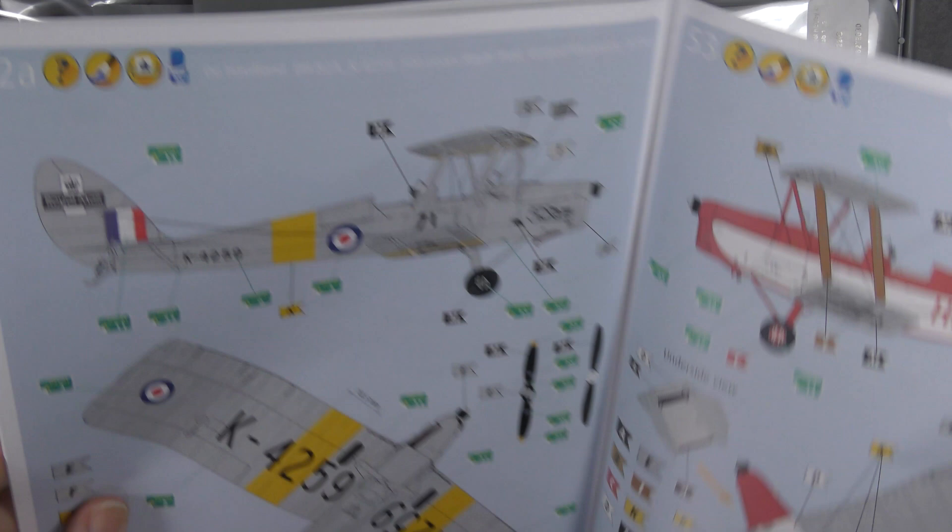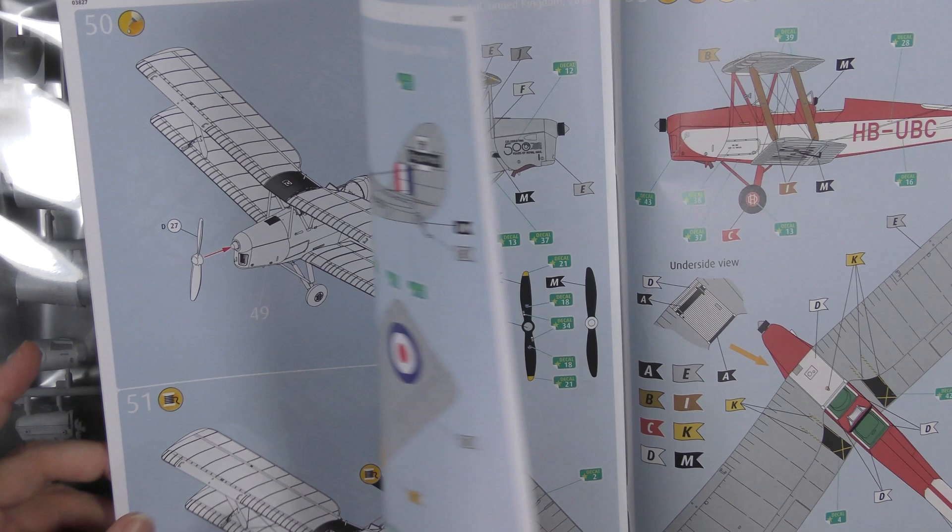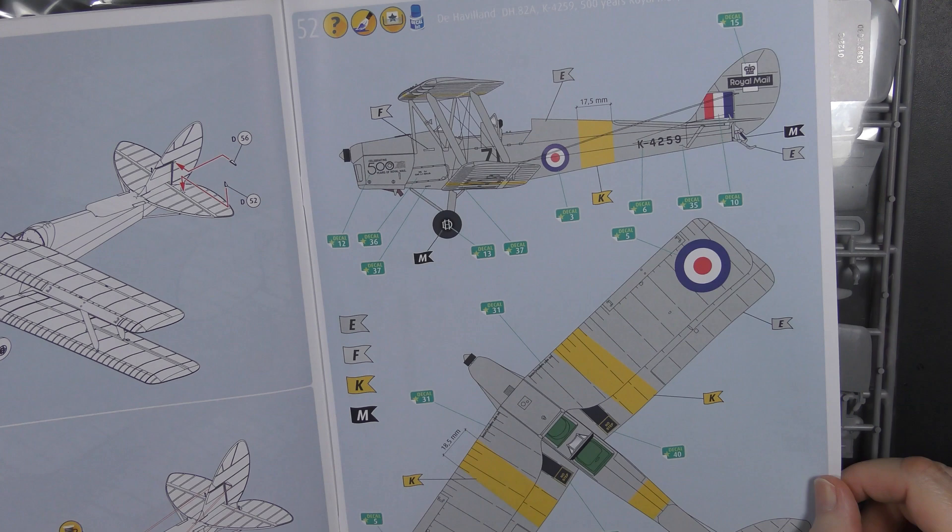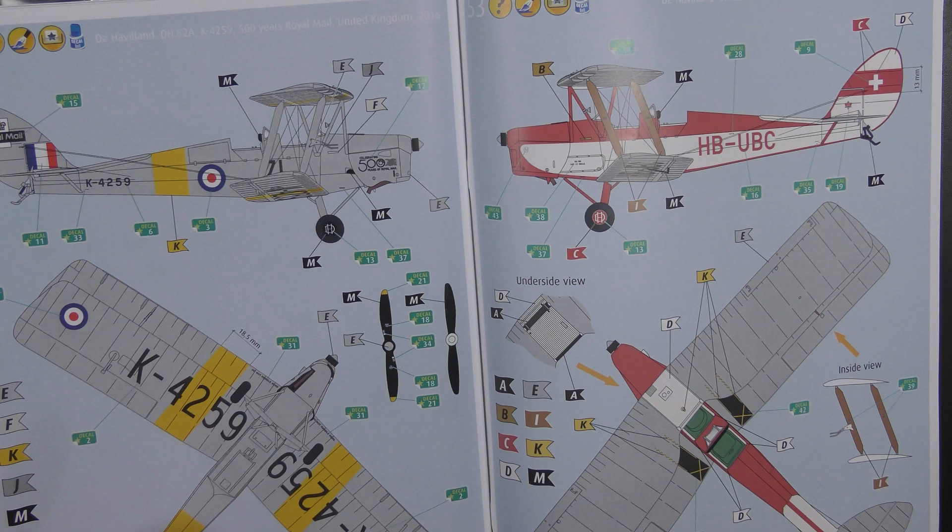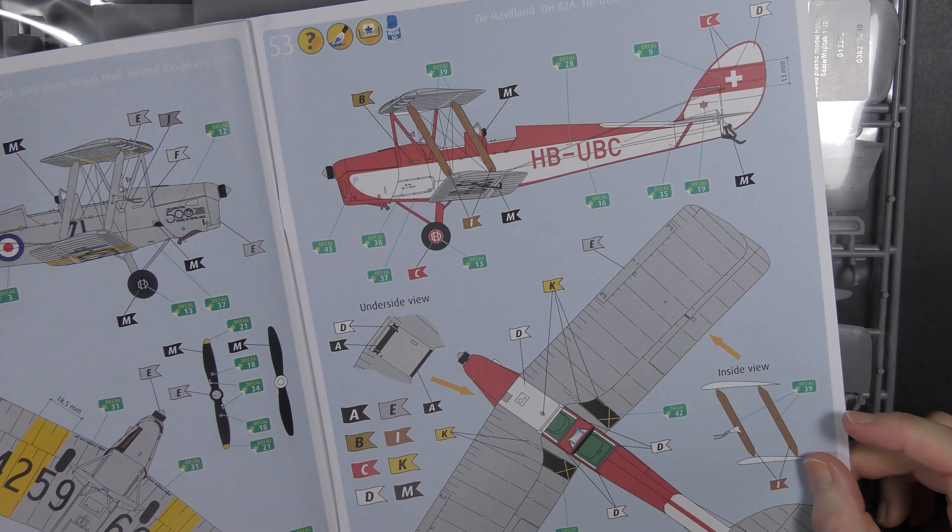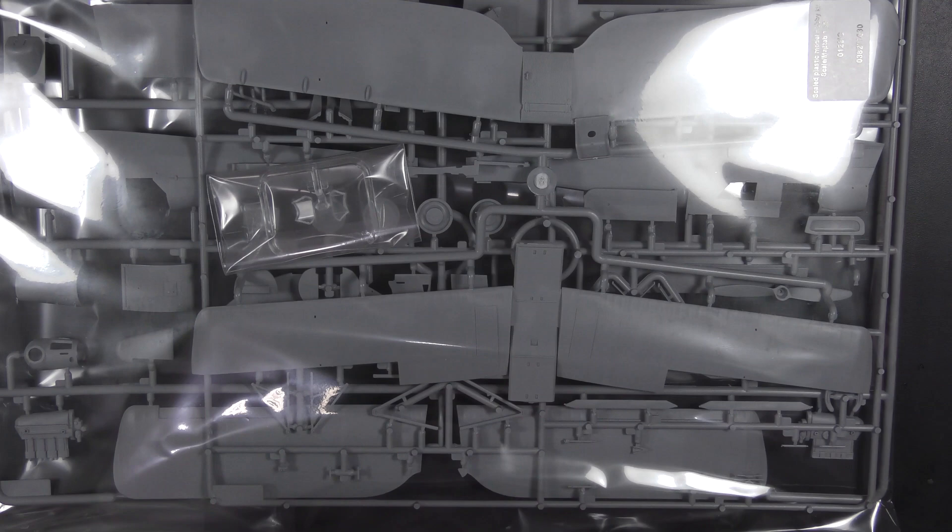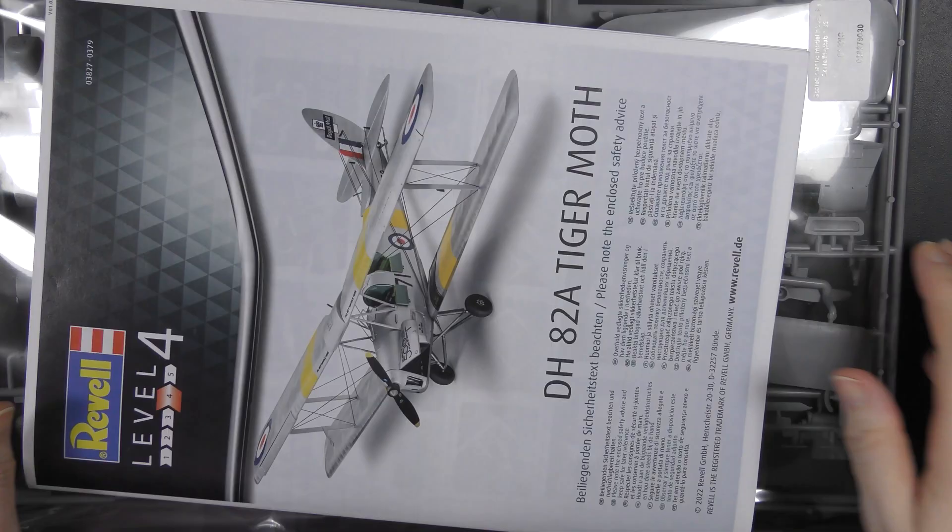There's the decal sheet, instructions, and Revell offer two schemes. Both are modern restored aircraft, an interesting departure. This one, which is branded by the Royal Mail for some reason. Celebration, 500 years of Royal Mail. And this one, a Swiss registered civil aircraft in a really beautiful scheme. Very, very nice, but it is the beautiful ICM plastic in a bargain package, £22.99.